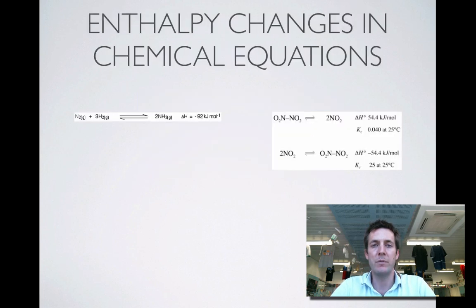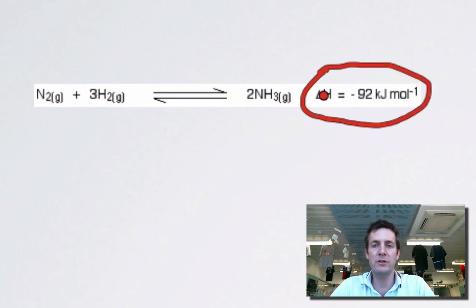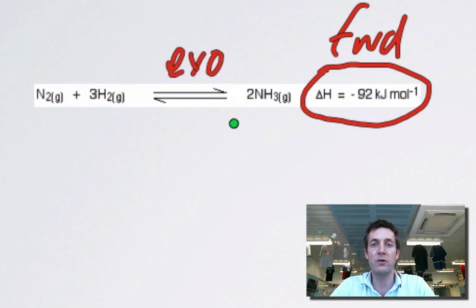Let's have a look at how we can represent enthalpy changes in chemical equations, in particular looking at a couple of reversible systems. Here is the Haber process, which we've looked at before. What this tells us here is that the enthalpy change for this process is minus 92 kilojoules per mole. Now, if we're told the enthalpy change after an equation, this by default refers to the forward reaction. So this is telling us that the enthalpy change for this process here is minus 92 kilojoules per mole. In other words, this forward process is exothermic. And that, of course, tells us that the backward process must be endothermic. In fact, it must be endothermic by the same number of kilojoules for every mole. So by convention, if you see delta H equals after an equation, it's talking about the forward reaction.